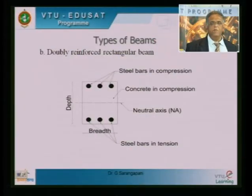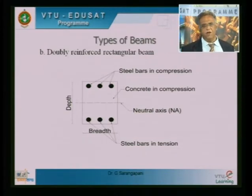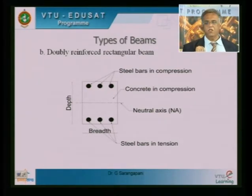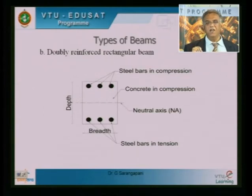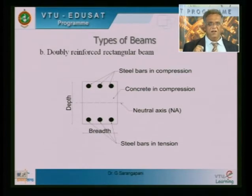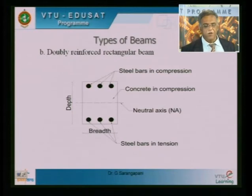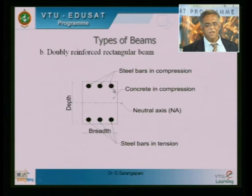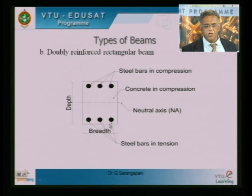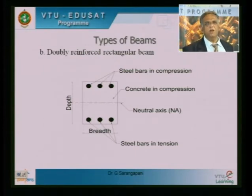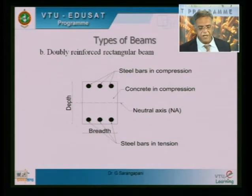A doubly reinforced rectangular beam is one where steel is provided both in the tension zone and in the compression zone. Steel is good in tension but equally good in compression, and the compressive strength of steel is very large compared to concrete. So in a doubly reinforced beam, steel bars are provided at the top in the compression zone as well as in the tension zone, with a neutral axis in between.